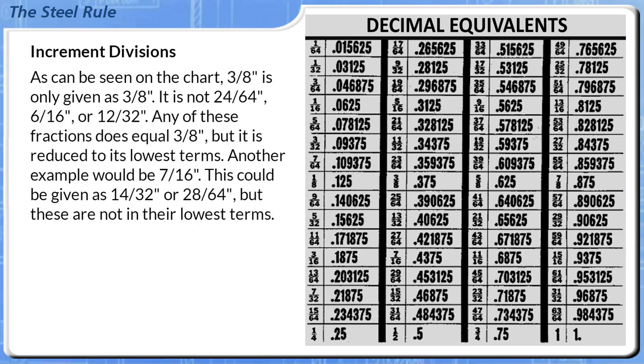As can be seen on the chart, 3/8ths inch is only given as 3/8ths inch. It is not 24/64ths, 6/16ths, or 12/32nds. Any of these fractions does equal 3/8ths inch, but it is reduced to its lowest terms. Another example would be 7/16ths inch. This could be given as 14/32nds or 28/64ths, but these are not in their lowest terms.